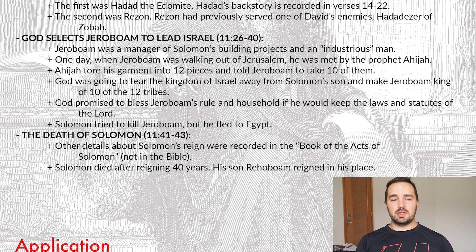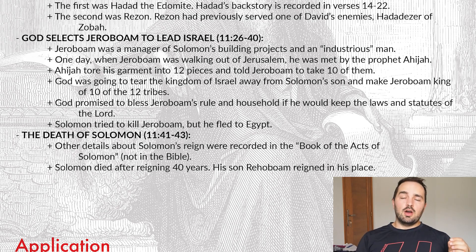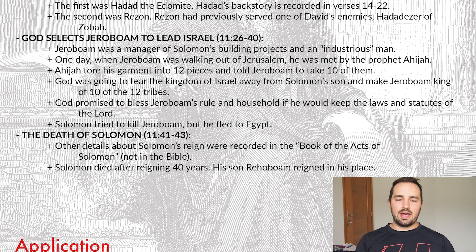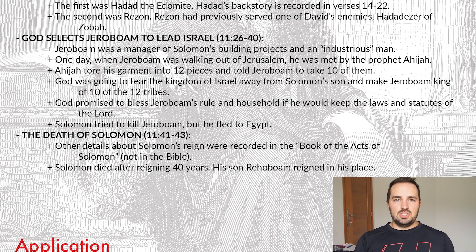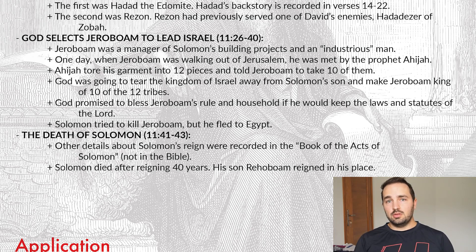Finally, the death of Solomon in verses 41 through 43. Other details about the reign of Solomon are recorded in a book called the Book of the Acts of Solomon — that one's actually not in the Bible. Solomon died after reigning for 40 years. His son Rehoboam reigned in his place. So unfortunately, you see Solomon's reign, which started off with so much promise, ending not so well — kind of like the reign of Saul.